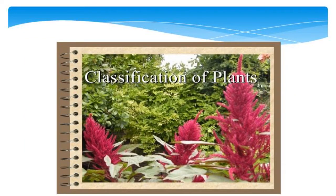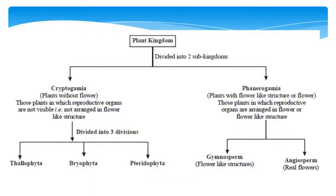Next, we are going to see the classification of plants. The plant kingdom is divided into two sub-kingdoms: Cryptogamia and Phanerogamia. Cryptogamia are plants without flowers, and Phanerogamia are plants with a flower-like structure or having a flower. Cryptogamia is divided into three divisions: Thallophyta, Bryophyta, and Pteridophyta. Phanerogamia is divided into two: Gymnosperms and Angiosperms. Gymnosperms have flower-like structures, while Angiosperms possess true flowers.